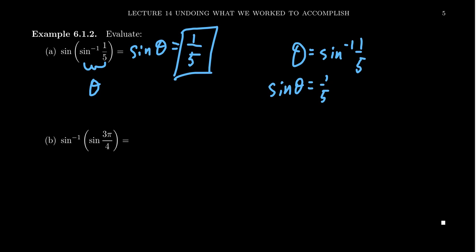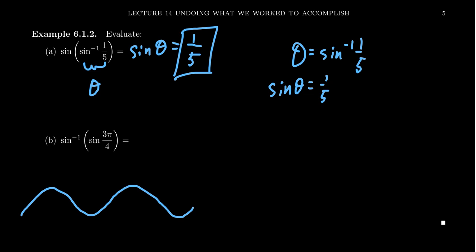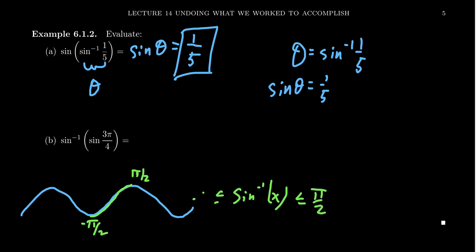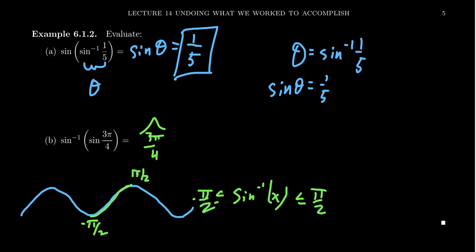Before we get too zealous with cancellation: sine inverse of sine of 3π/4 — you might be tempted to say this is 3π/4 because they cancel out. But that's not the answer. The issue is that sine is not a 1-to-1 function; its domain was restricted to define sine inverse. The range of sine inverse is always between π/2 and −π/2, and 3π/4 does not sit inside that range. So sine inverse of sine of 3π/4 gives the reference angle, which is π/4.